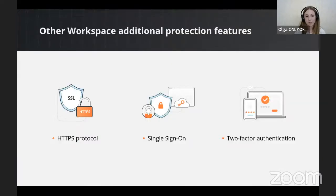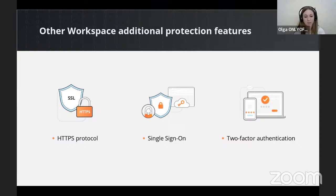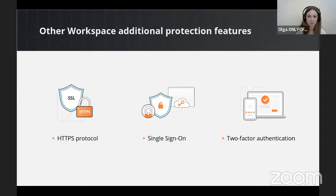As for other workspace protection features, OnlyOffice allows you to encrypt your traffic using the HTTPS protocol, whether you already possess an SSL certificate or not. In most cases, accessing the portal via HTTPS is much more secure than via HTTP, which is used by default. You can protect data against breaches and ensure HIPAA compliance. The encrypt data feature provided by the control panel allows you to ensure the security of sensitive portal data.